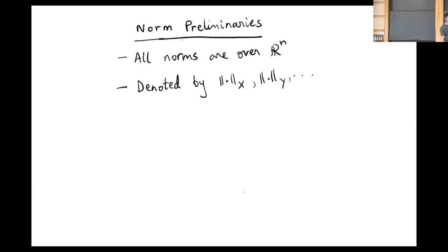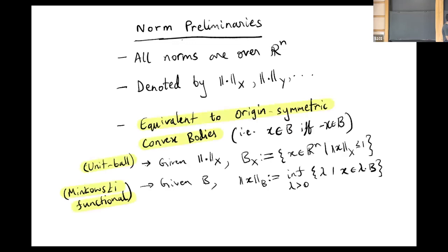All norms are denoted by norm of X, norm of Y. There's a well-known correspondence between norms and origin symmetric convex bodies. Given a norm capital X, the convex body we look at is the unit ball, the set of points little x such that the capital X norm is at most one. Given an origin symmetric convex body, we define a norm as the minimum scaling lambda of the body B that contains the point little x.